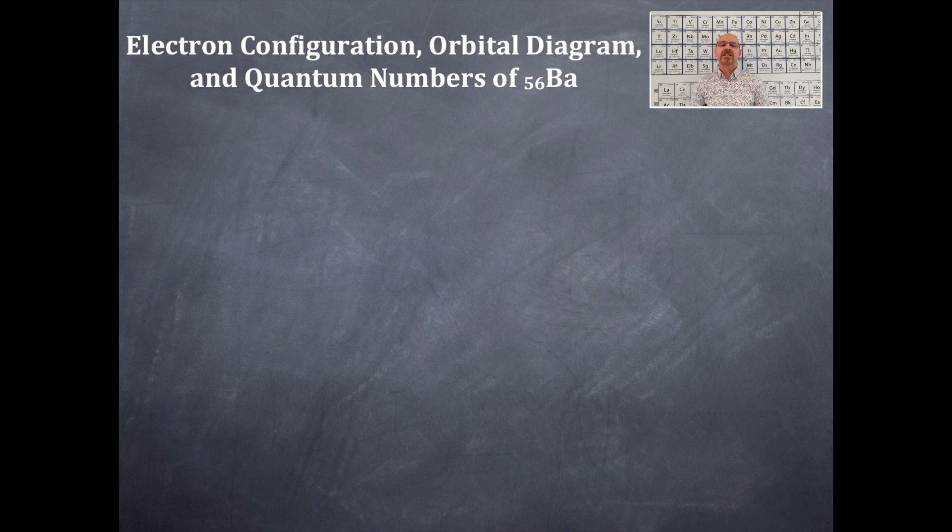So today we're going to do the electron configuration, orbital box diagram, and a set of four quantum numbers for barium.